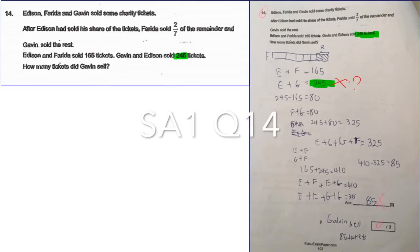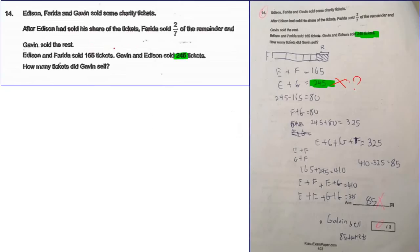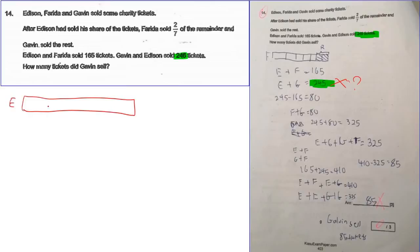Now for Question 14: after Action has sold his share of the ticket, Farrah sold two over seven of the remainder. So I know that here is E. Then it says he sold some — I don't know how many — so I just draw it here.